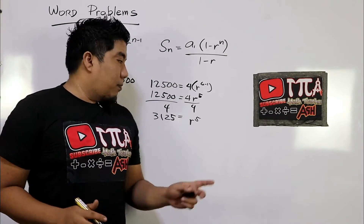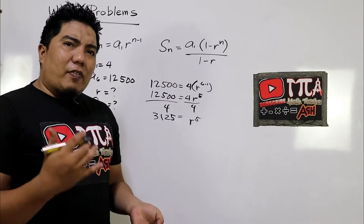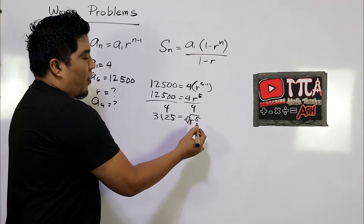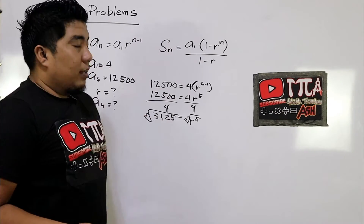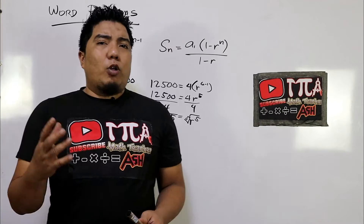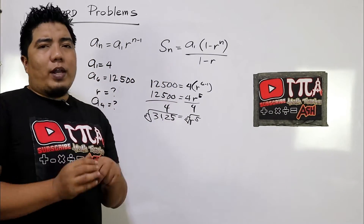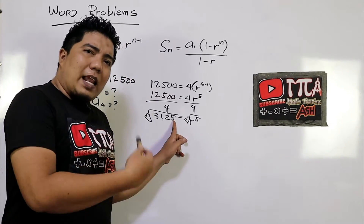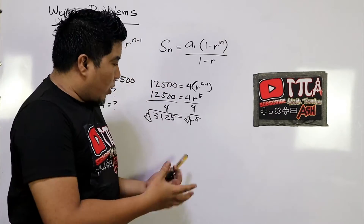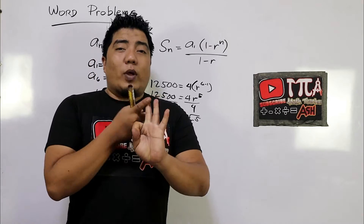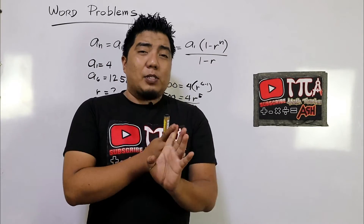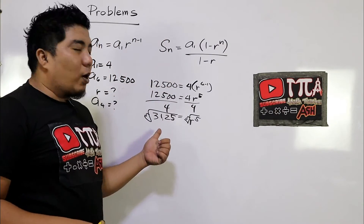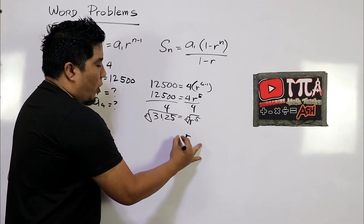This is still in the fifth power, so how do we eliminate it? The opposite of a power is the root, so we take the fifth root of both sides: the fifth root of r to the fifth, and the fifth root of 3,125. What number multiplied five times by itself equals 3,125? Since the last digit is 5, we try 5: 5×5=25, 25×5=125, 125×5=625, 625×5=3,125. Therefore, our r is equal to 5.